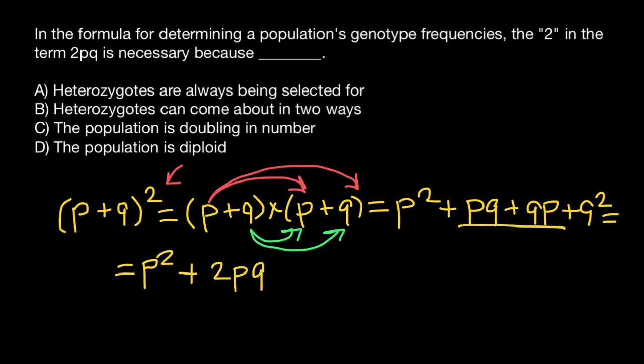So we put 2pq, which stands for this part of the formula, plus q squared. And all this equals to one.